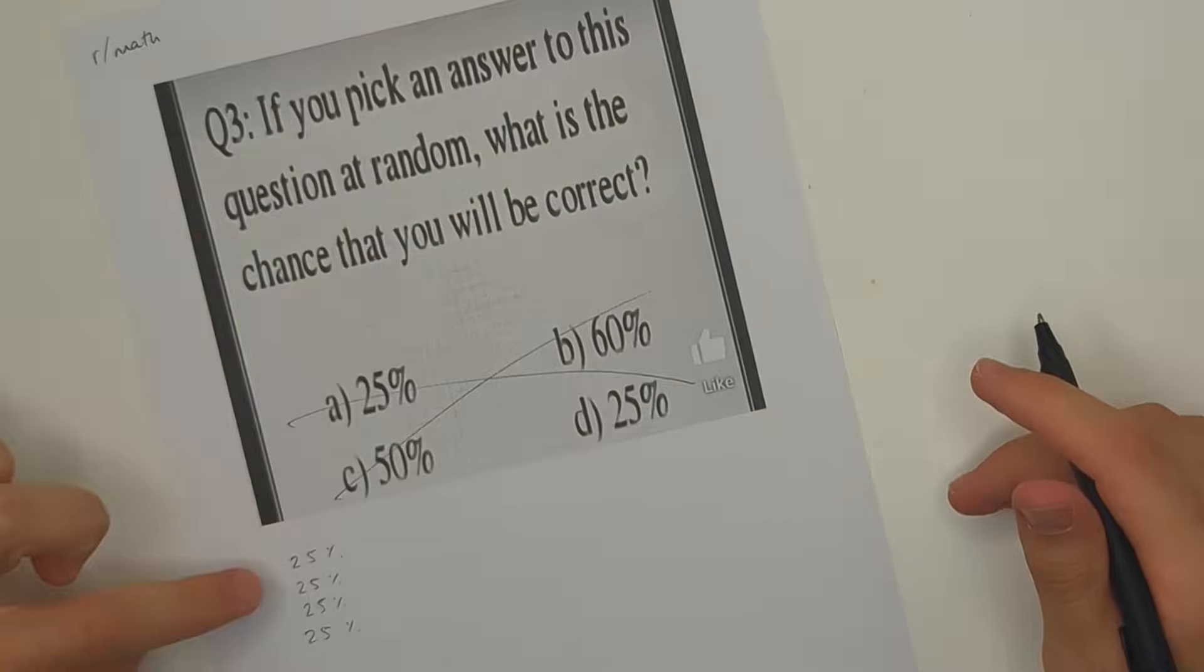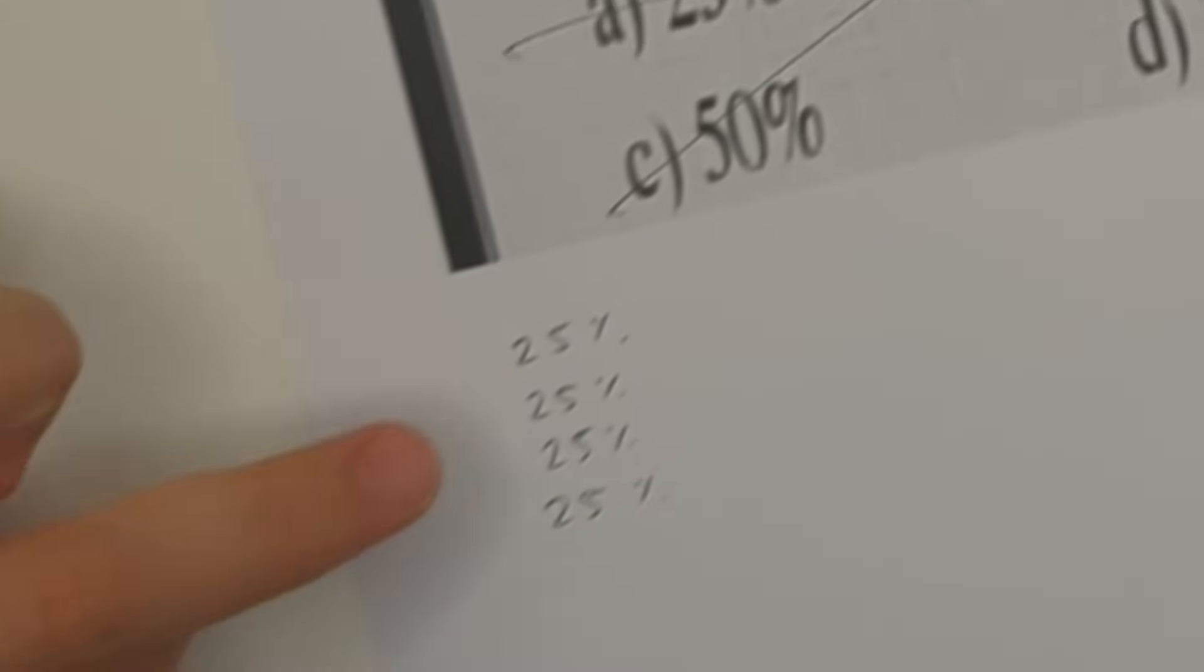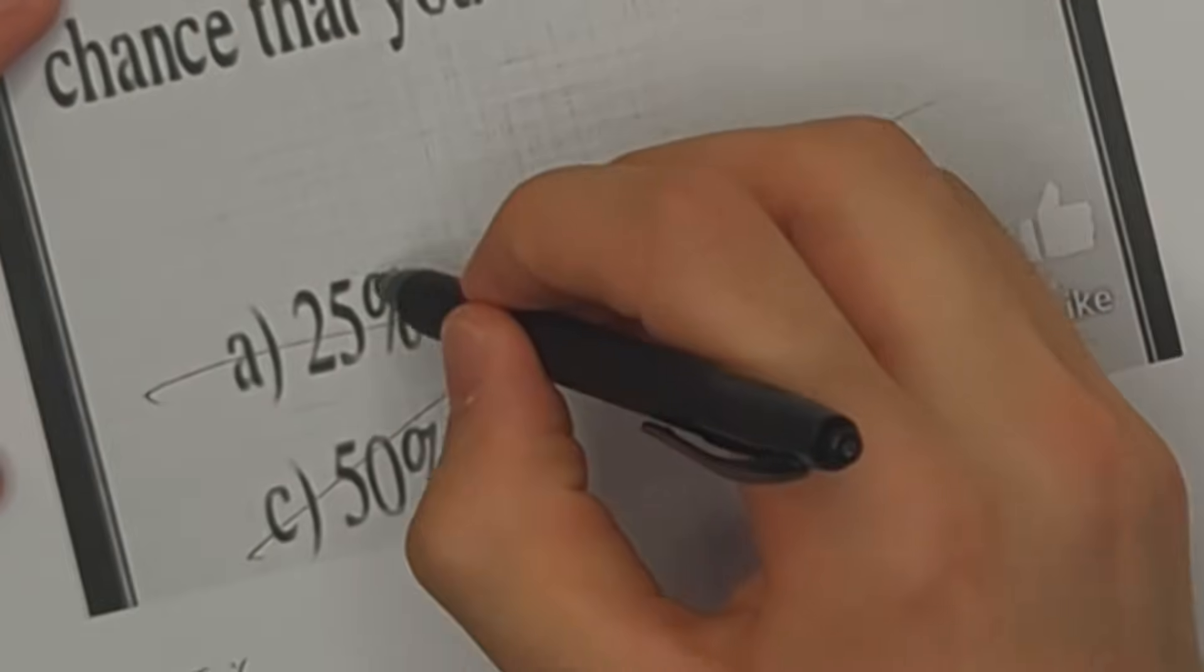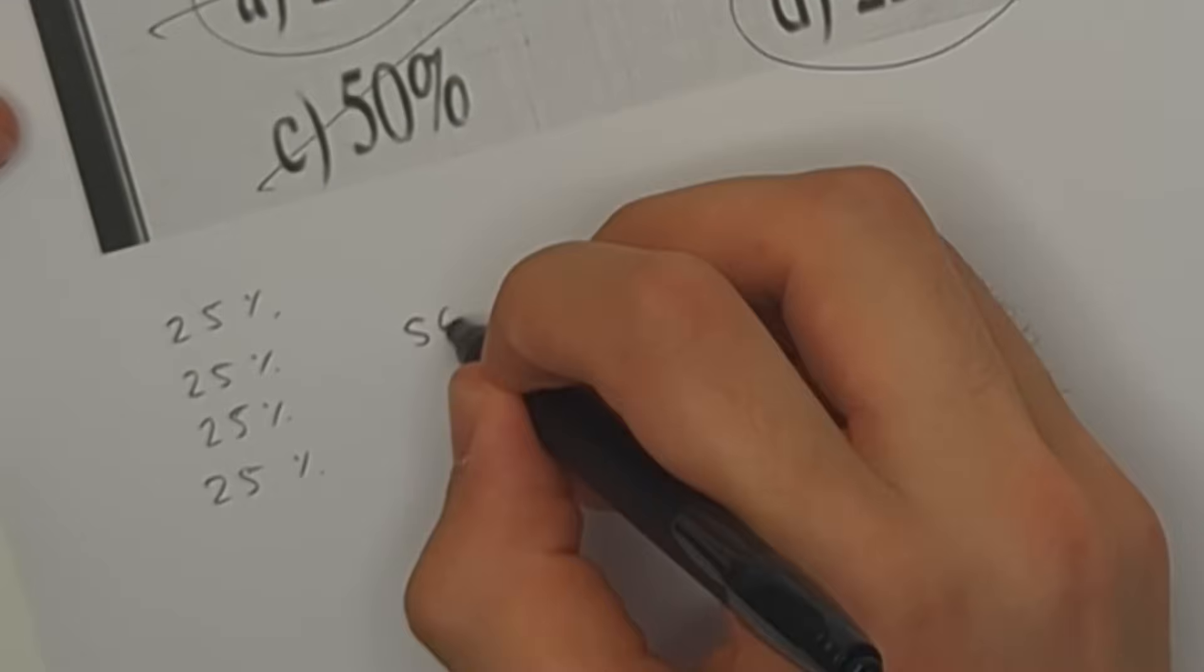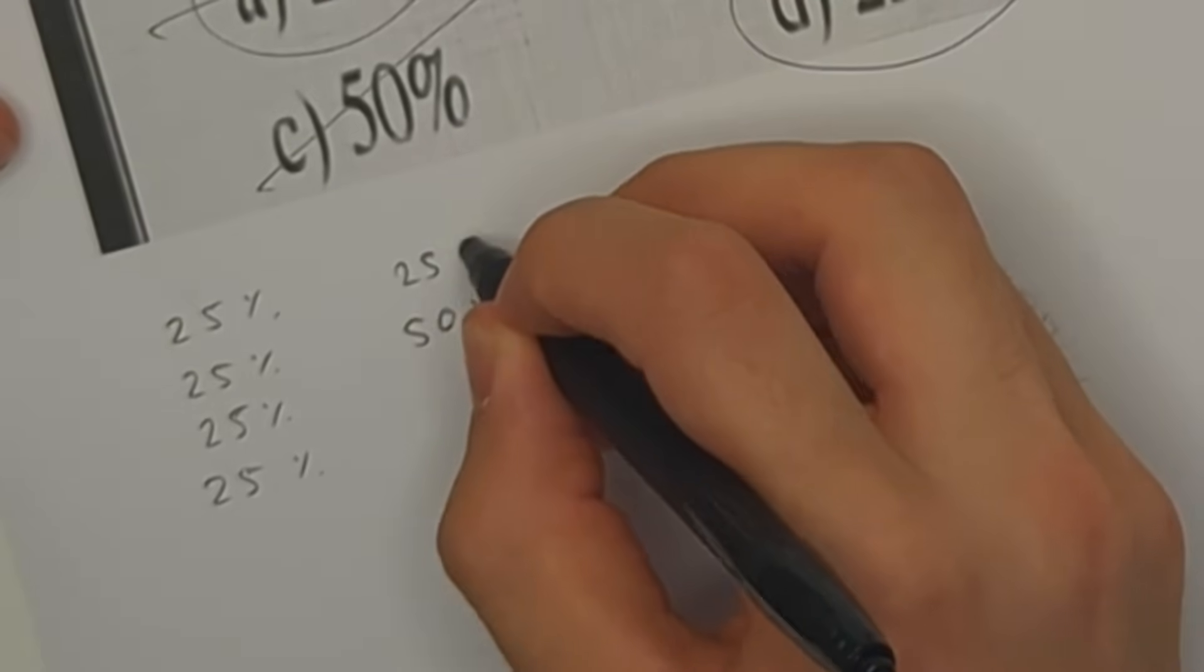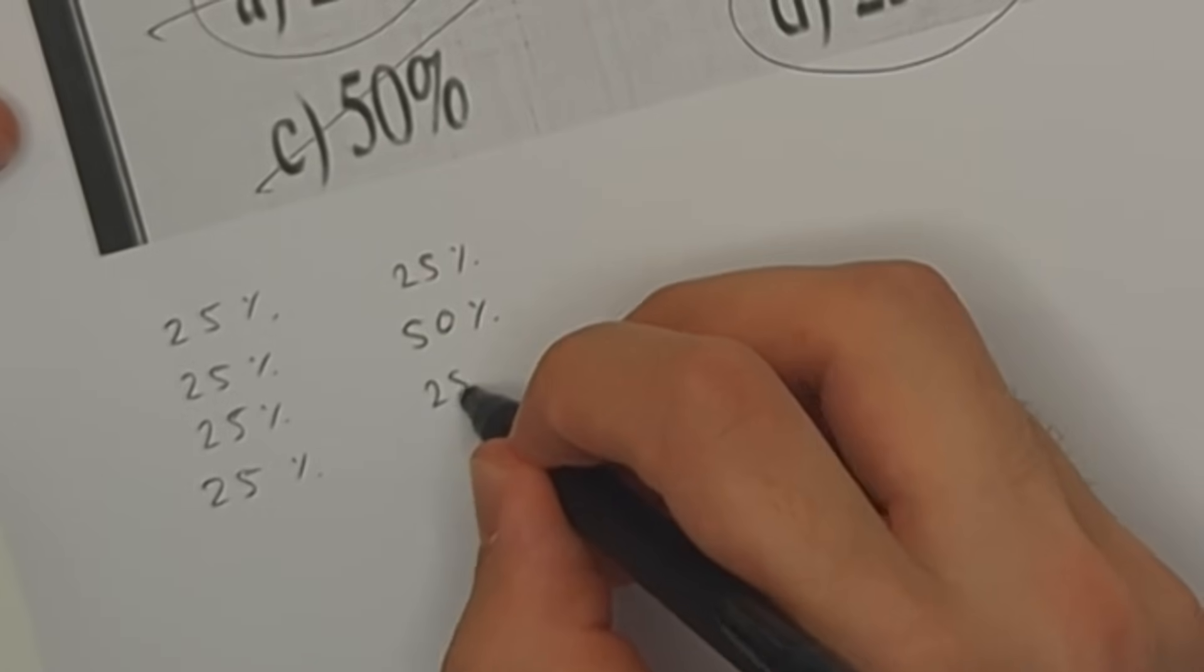The problem is we should have four options with each of the options being 25%, but because two of the options are the same then we actually have three options with one of them being 50%, one of them being 25%, and the other being 25%.